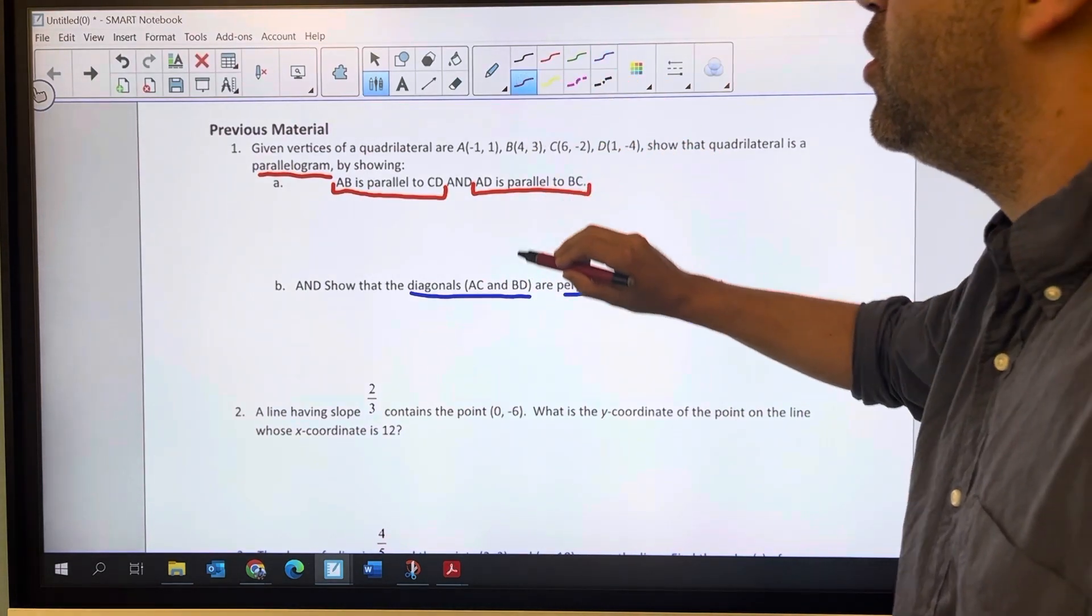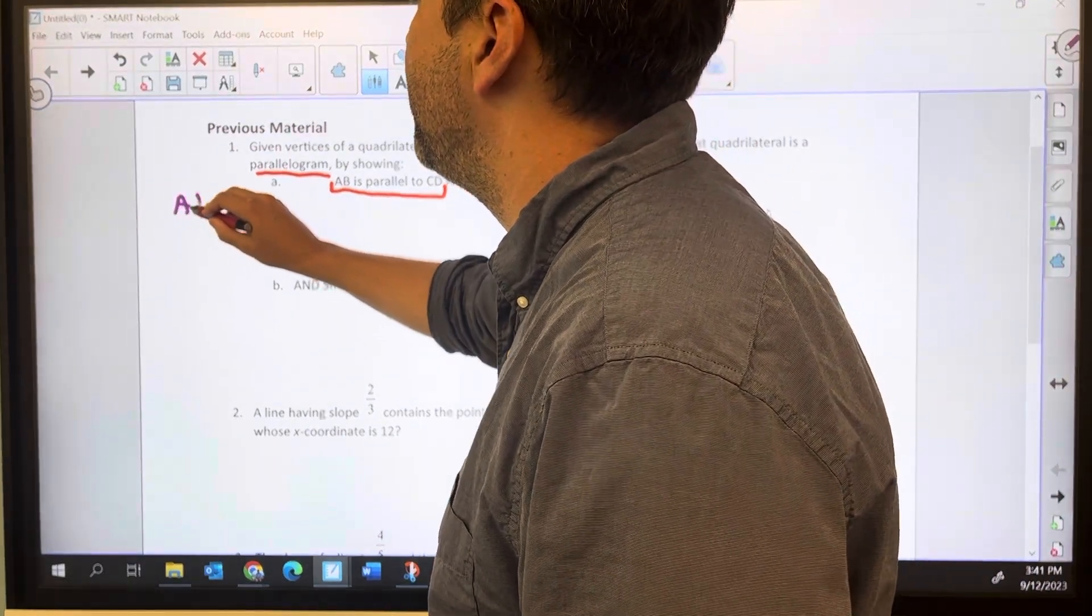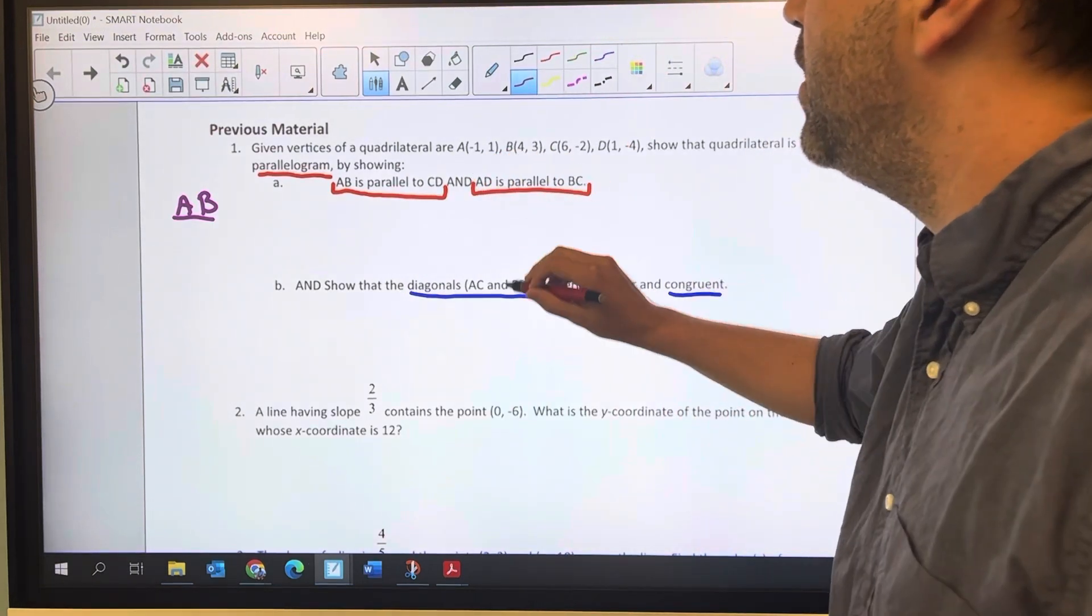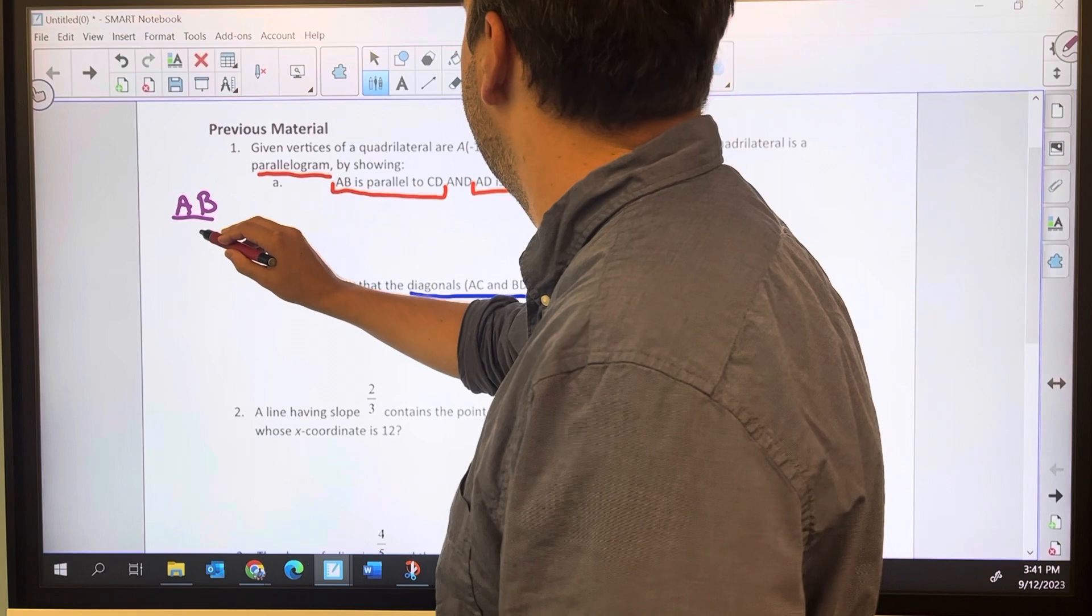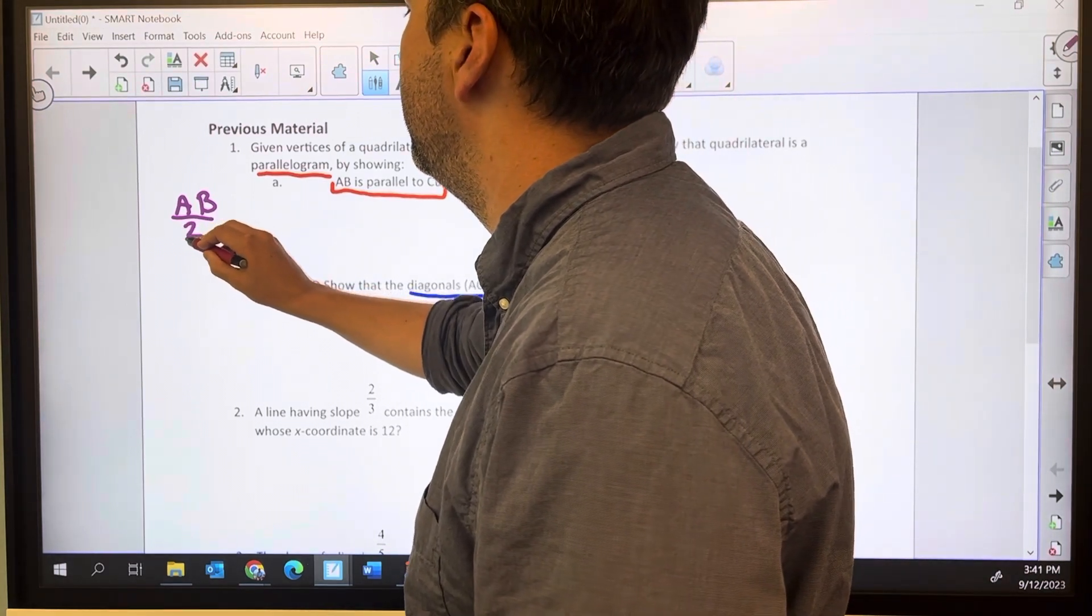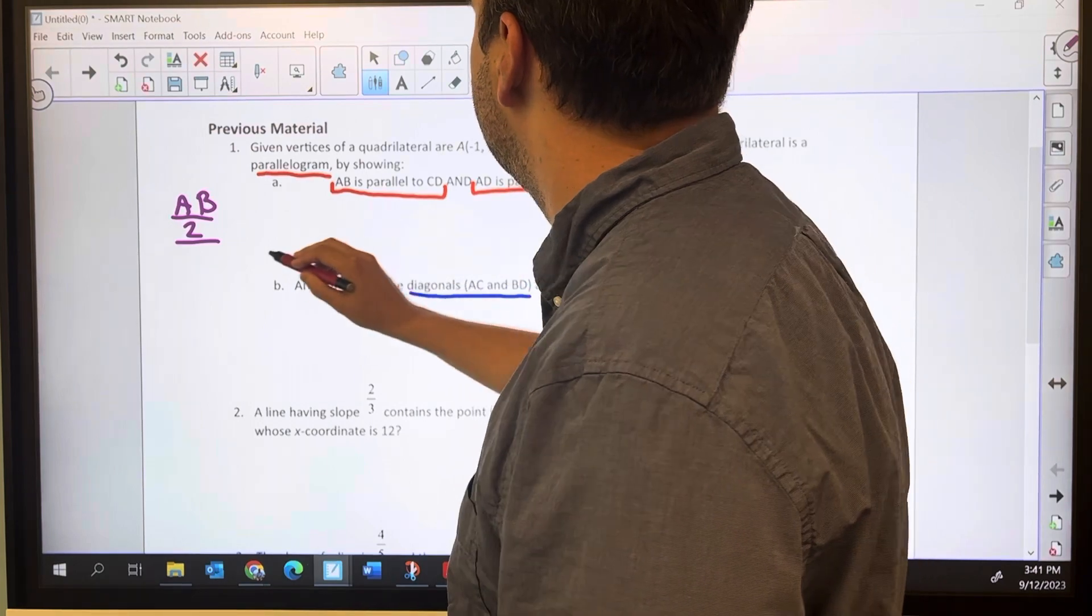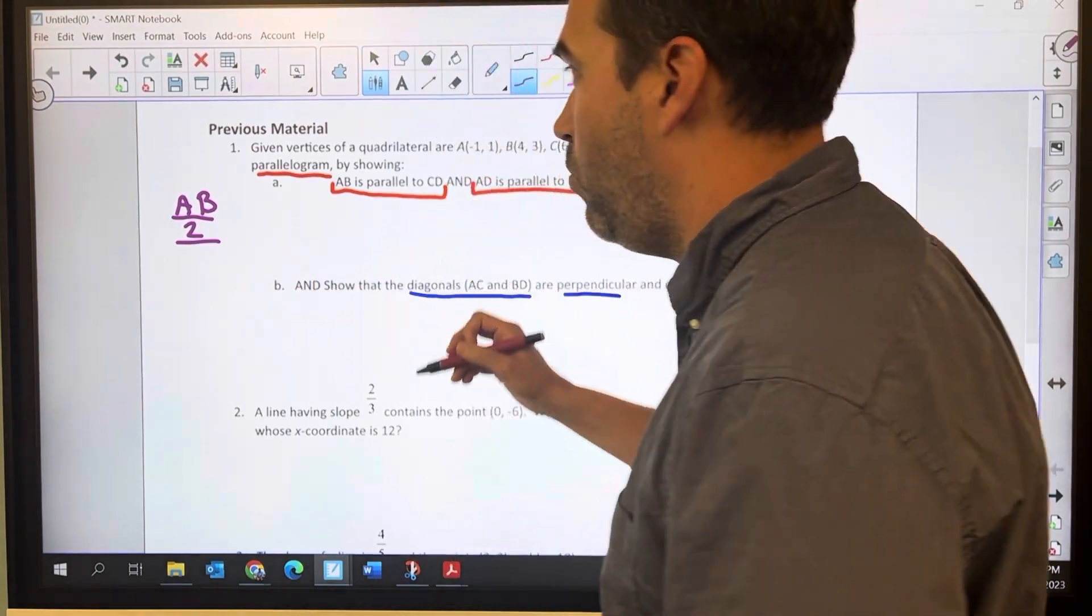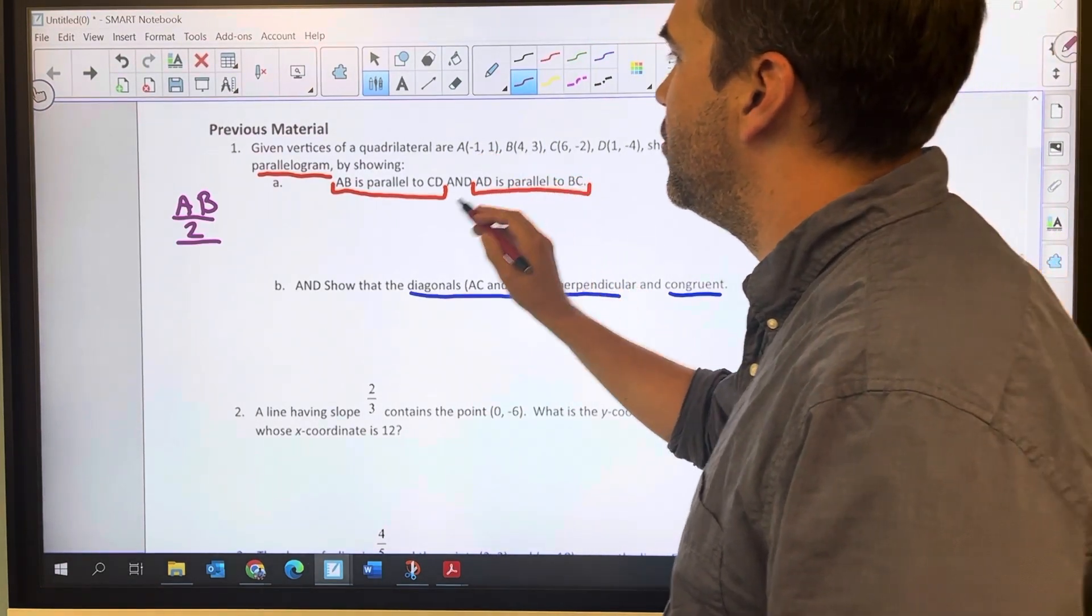So let's start with the slope for AB. For AB I'm going from negative 1, 1 to 4 comma 3. So change in Y is going to be 2 over change in X. Change in Y, it's going up 2. Change in X, it's going up 5.